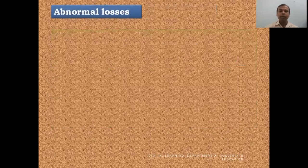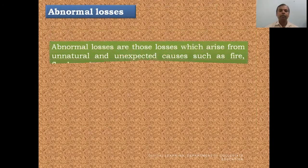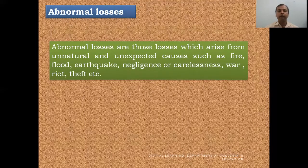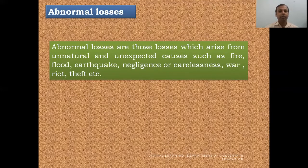Abnormal losses are those losses which arise from unnatural and unexpected causes. These can occur due to fire, flood, earthquake, negligence, carelessness, war, theft, riot, and even accidents. These are all the reasons for abnormal losses — they are losses we do not expect, such as fire, short circuit, flood, famine, or earthquake.